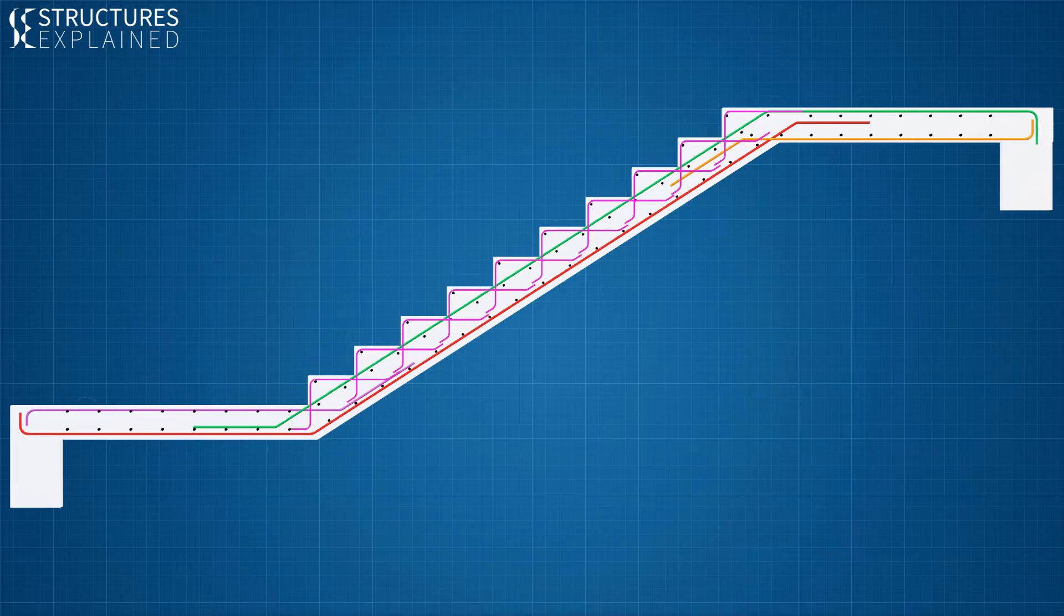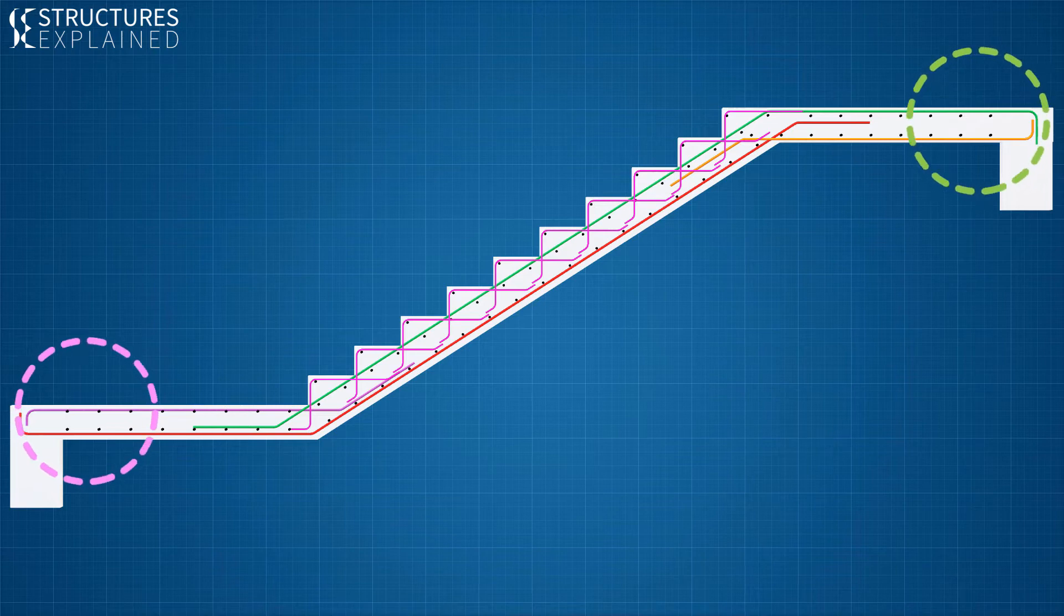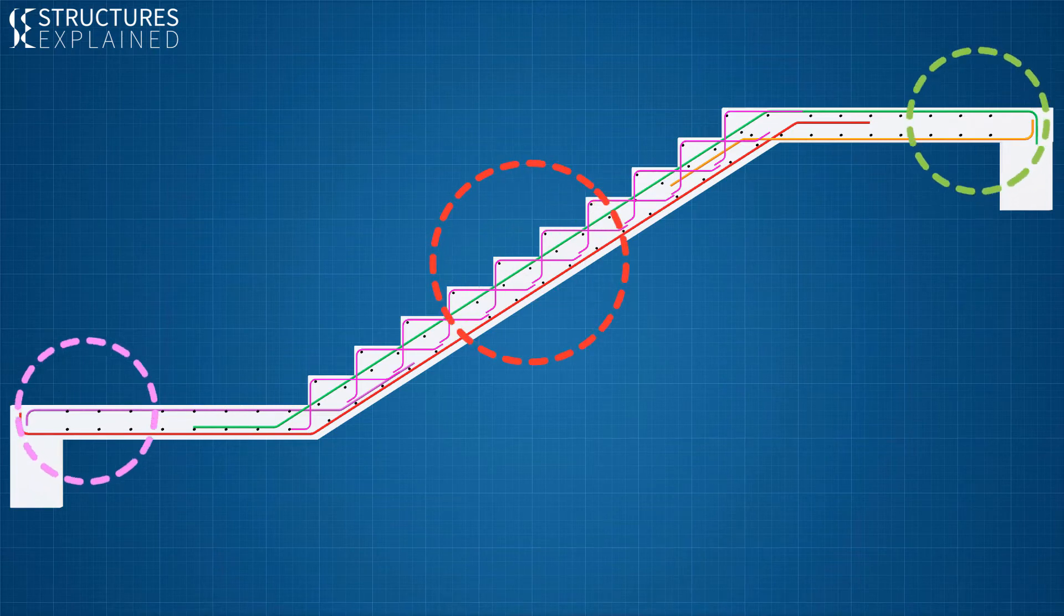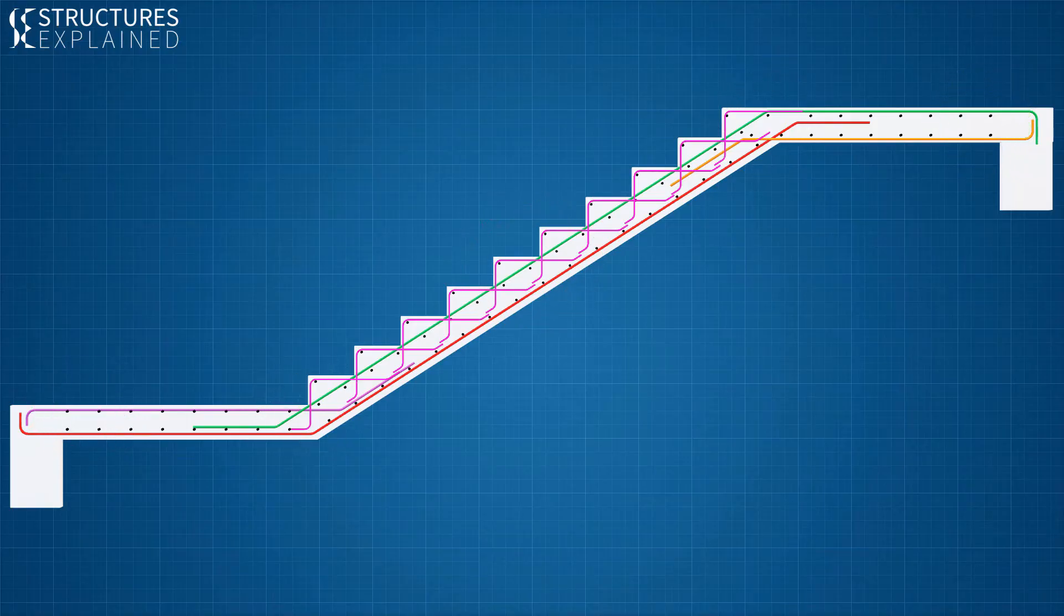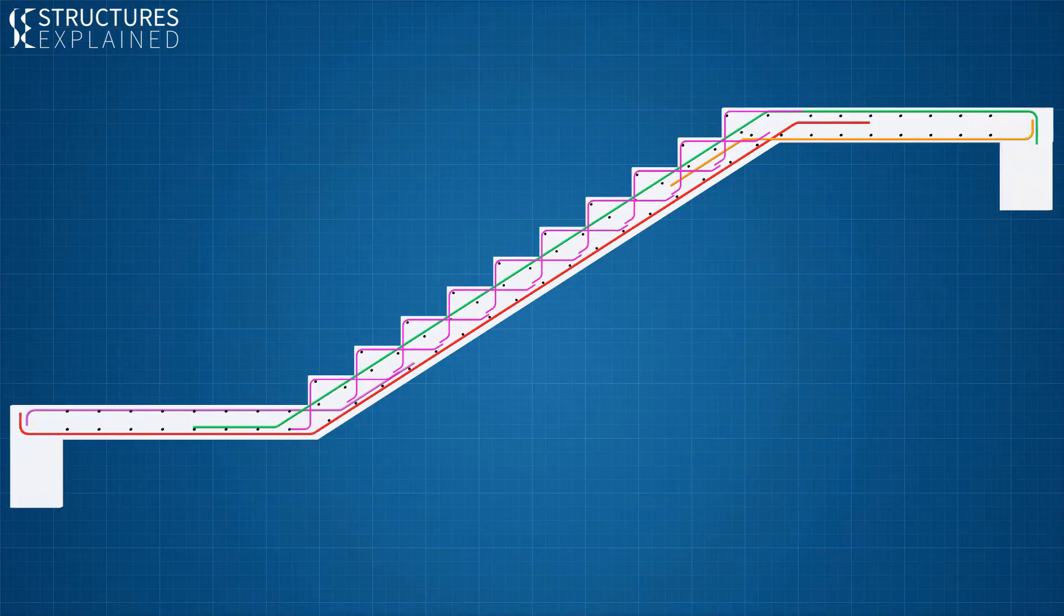In a stair flight, top reinforcement will be required at supports to resist the negative bending moments and bottom reinforcement will be required at mid-span to resist the positive bending moments. For the two junctions between flight and the landing, special detailing is provided to resist the stresses generated there. Let's understand the detailing of rebars one at a time.